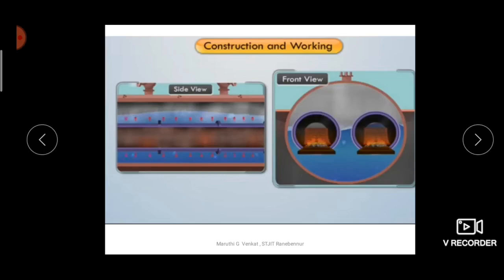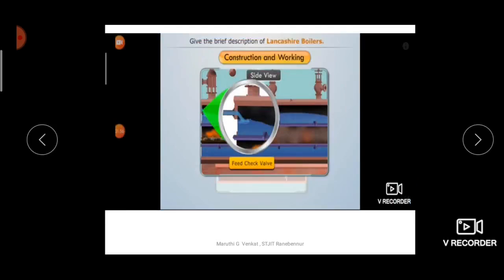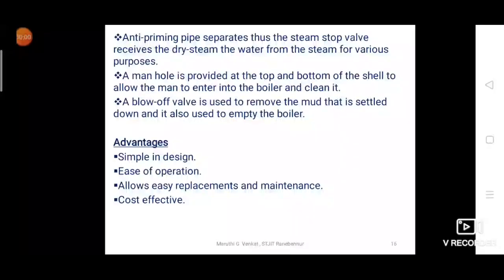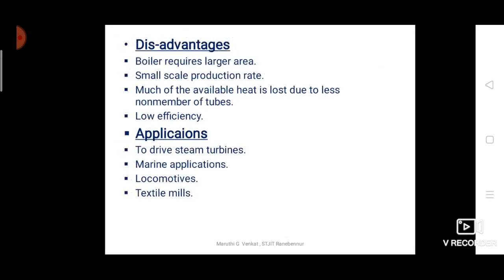The steam collected at the top is sent to the turbine using the steam stop valve. A feed check valve feeds water into the boiler. The advantages of the Lancashire boiler are: it is simple in design, easy to operate, allows easy replacement and maintenance, and is cost effective. The disadvantages are: it requires a larger area, steam production rate is less, much of the available heat is lost due to the small number of tubes, and efficiency is very low.